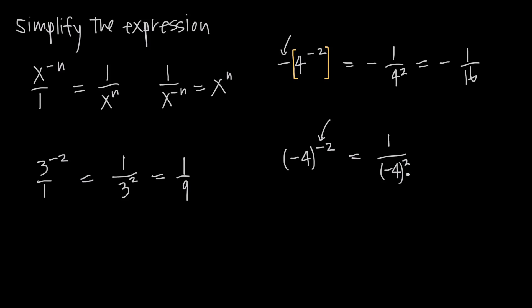Now, with the negative sign inside the parentheses, and we're squaring negative 4, what we have here is essentially 1 over negative 4 times negative 4, which we know is going to be 1 over 16, because we have two negative signs multiplied together. They cancel with each other and become a positive, and we have 4 times 4, which is 16.